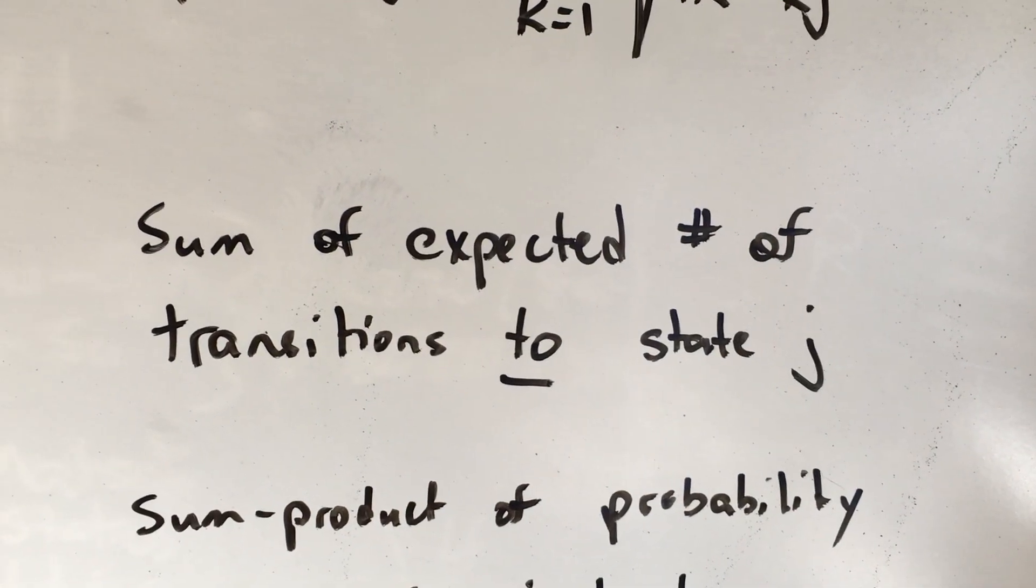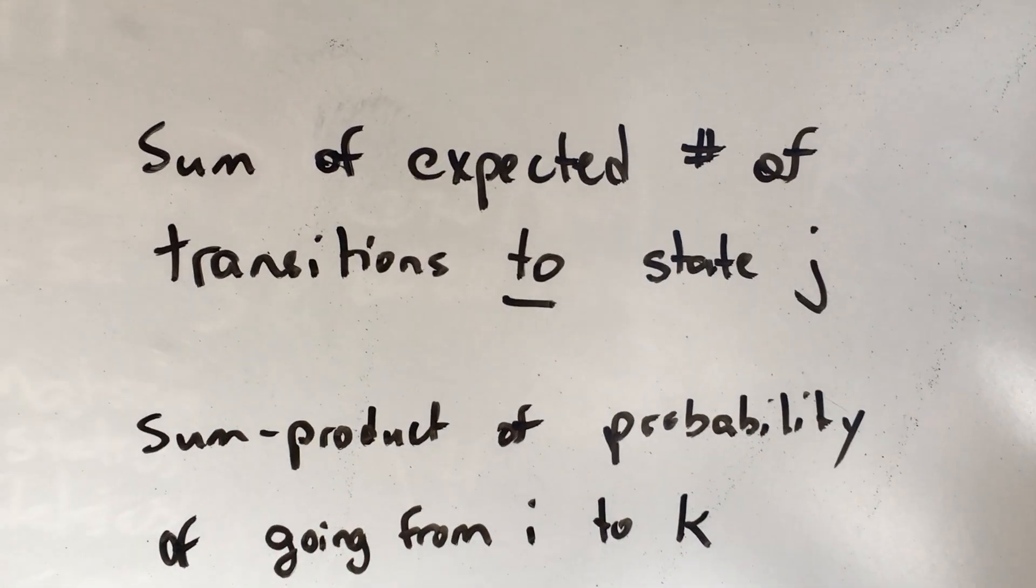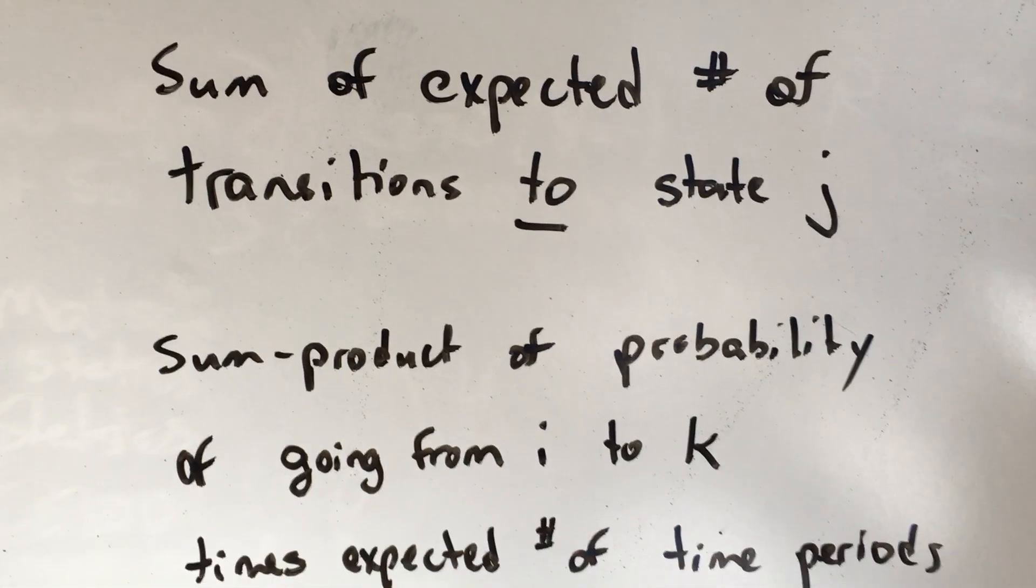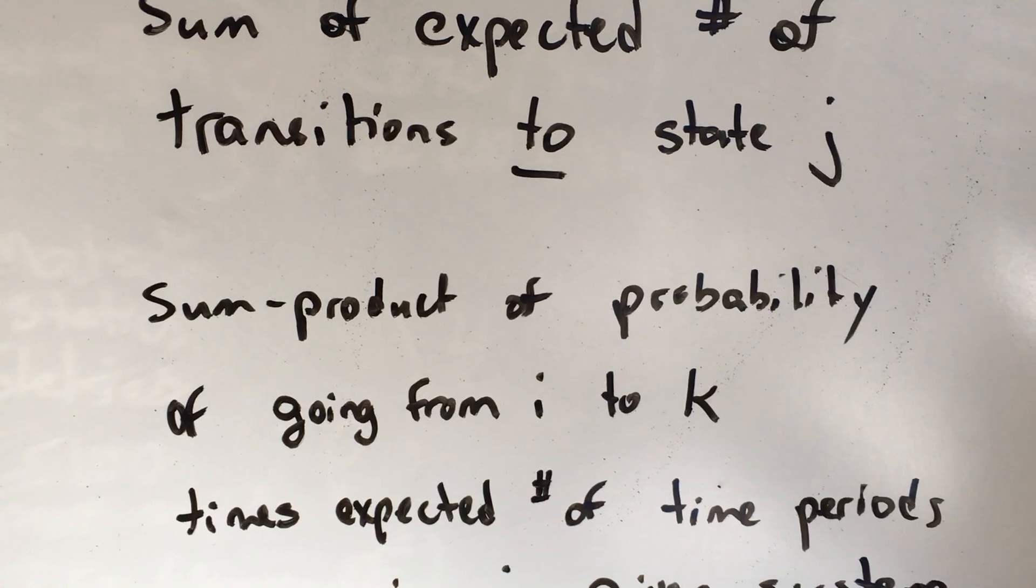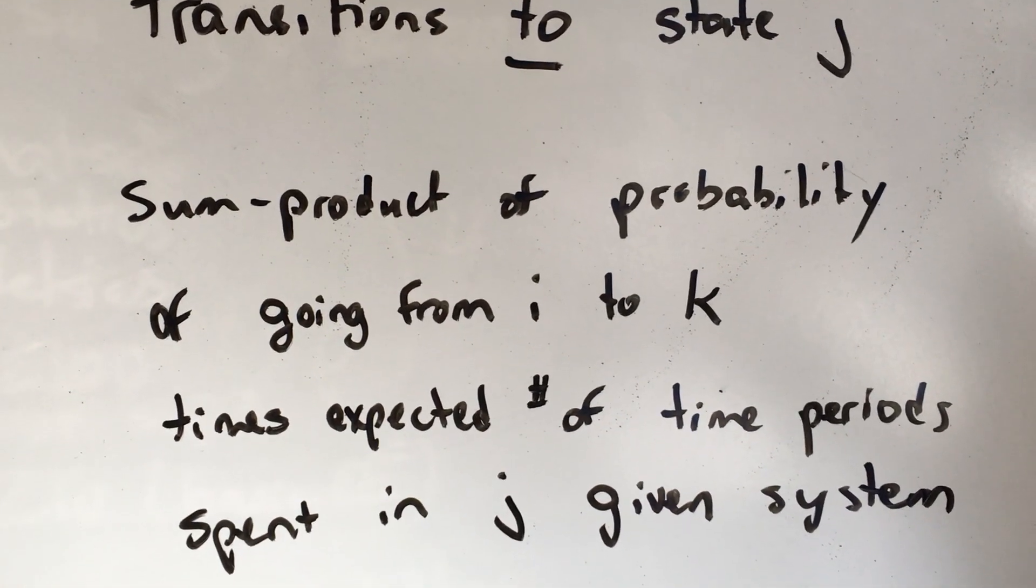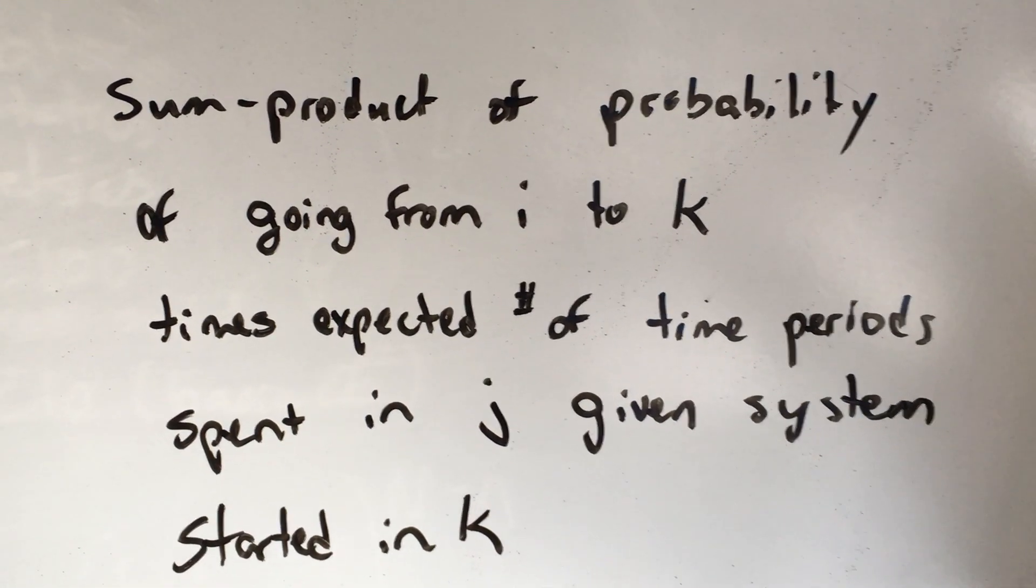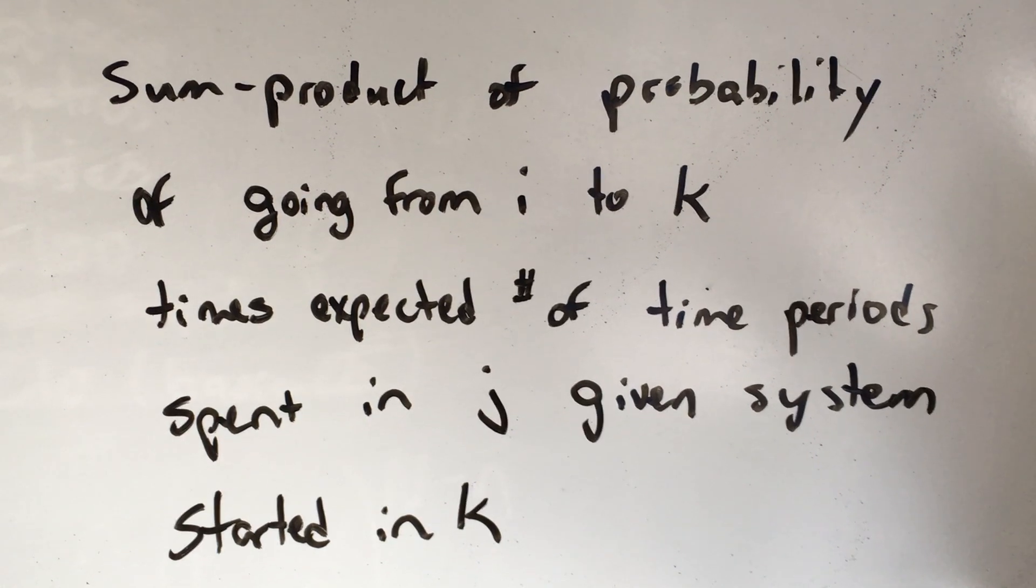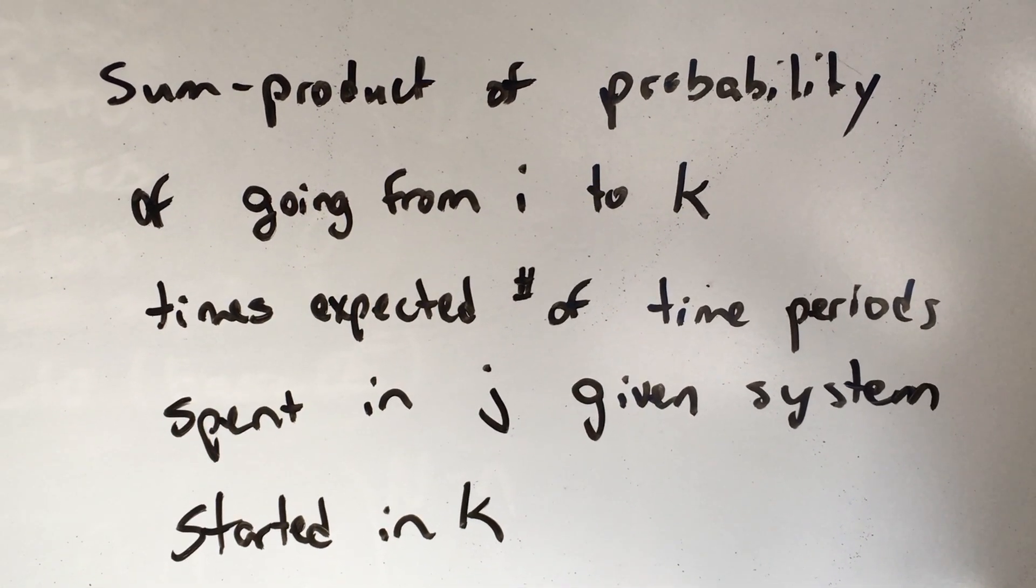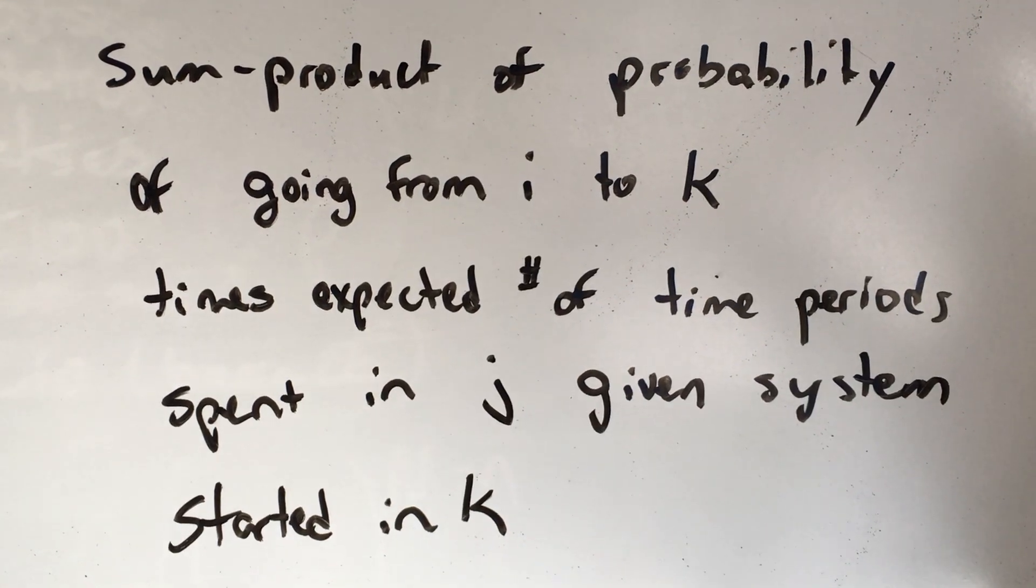This is the sum, part of this, is the sum of the expected number of the transitions to state J, otherwise known as the sum product of the probability of going from I to K, which were K's sum intermediate state, times the expected number of time periods going to from K, or spent in J, given that you started in K. So think about that a little bit, rewatch this part, if that didn't quite make sense. I just said the same thing twice.